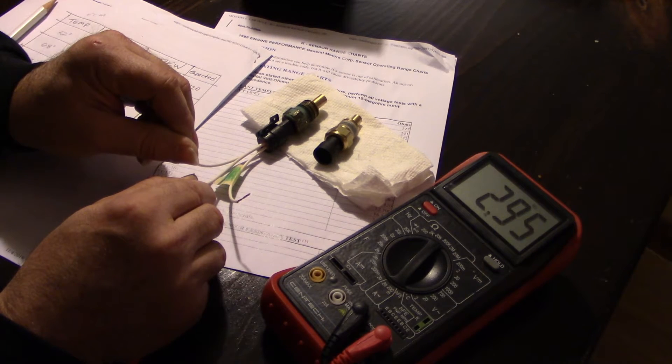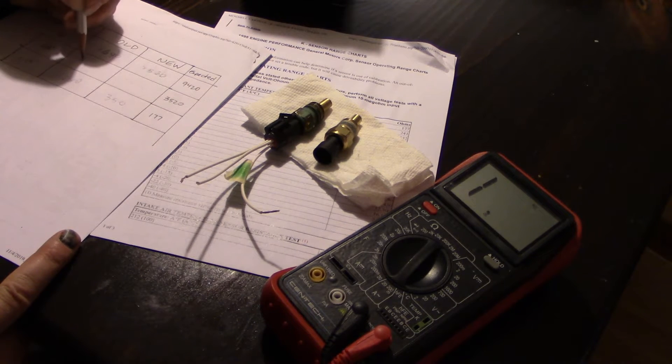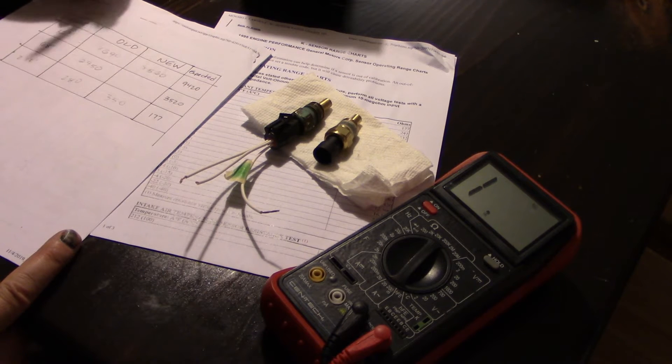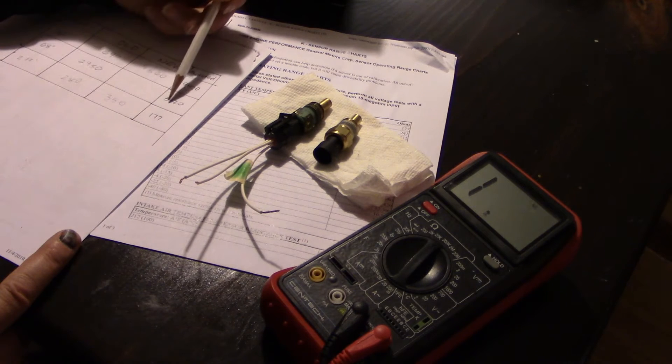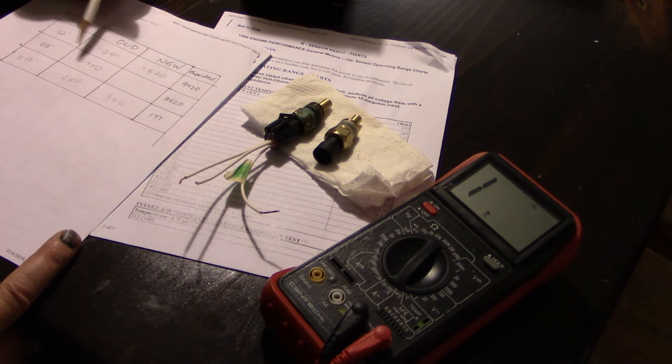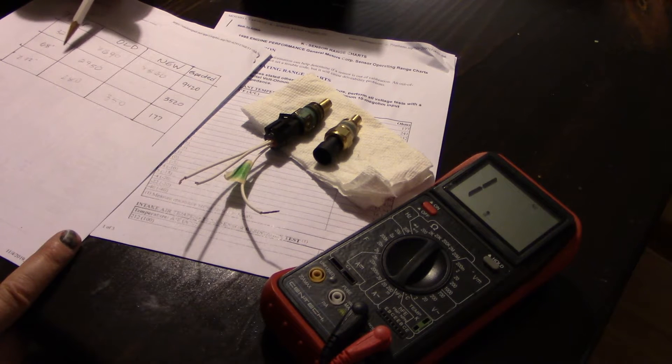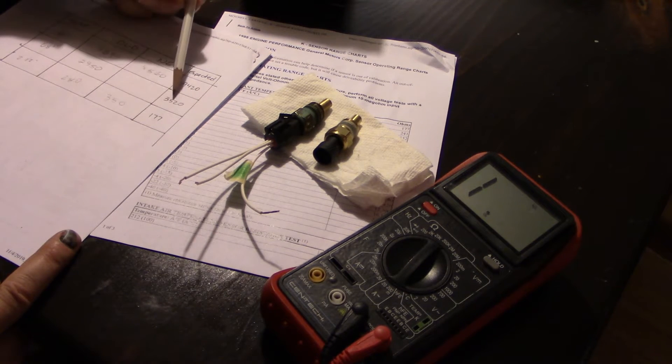2960, 2950, all right, we'll record that. Now at 68 degrees we could expect the reading according to the table of 3520. It's probably a little warmer in here than 68, probably 72 degrees, so it makes sense that the reading is a little lower than what we expected.